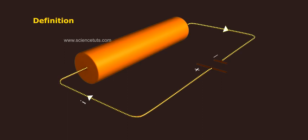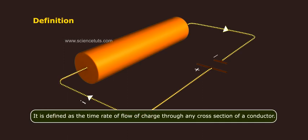Definition of current and definition of unit of current. It is defined as the time rate of flow of charge through any cross-section of a conductor.